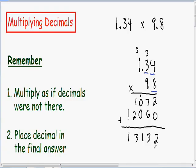So since our original problem has 3 numbers to the right of our decimal, our final answer has to have 3 numbers to the right of our decimal. So I'm going to count our first 3 numbers: 1, 2, 3. And now I can place my decimal point. And notice how we have 3 numbers in our final answer to the right of our decimal. So 1.34 times 9.8 is 13.132.